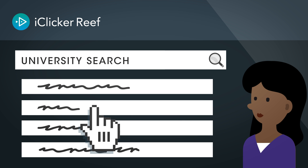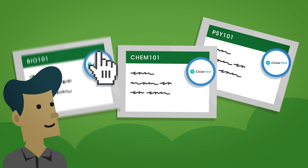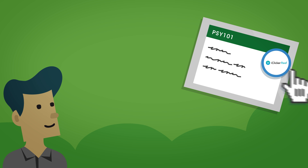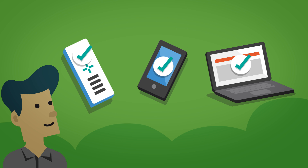If you used a link from the gradebook website, your class should already be added for you. If you have different courses with links in your school's gradebook website, make sure to click on them all so that all of your polling, quizzing, or attendance data get added correctly.